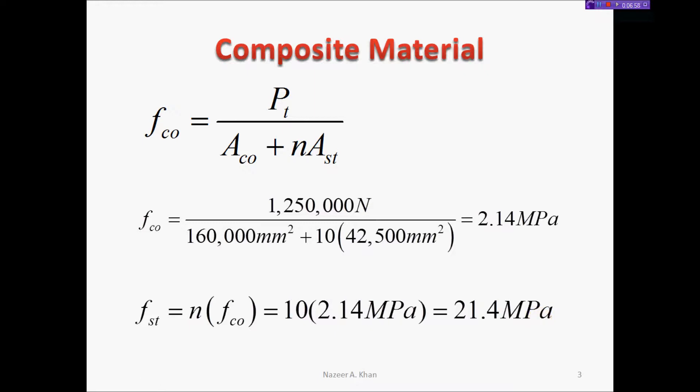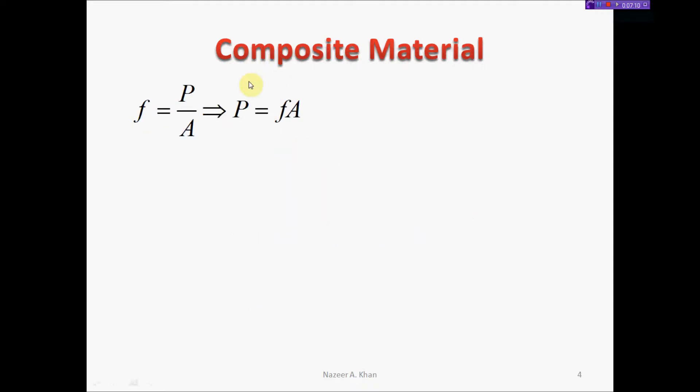The problem asks us to find the load, not just the stress. Using f = P/A, we rearrange to P = f × A. For concrete, P_co = 2.14 MPa × 160,000 mm² = 342,400 newtons. When working with MPa and millimeter squared, the result is newtons.